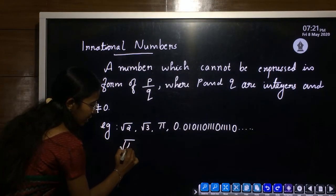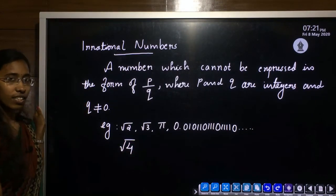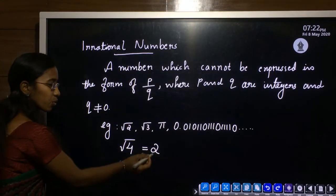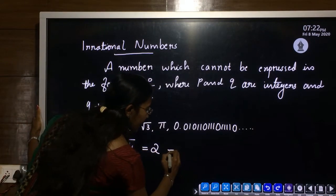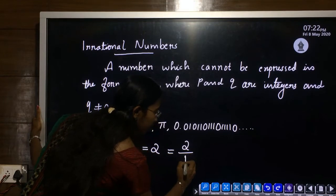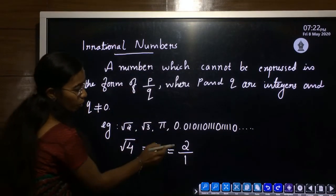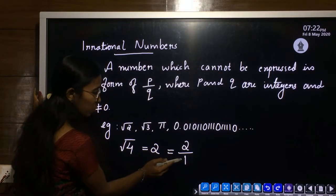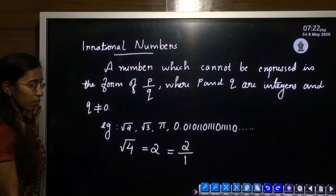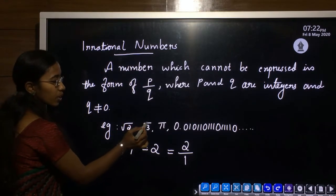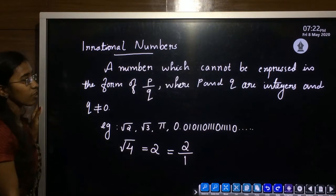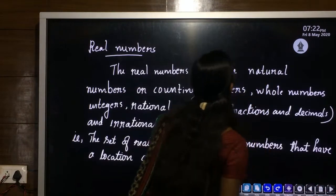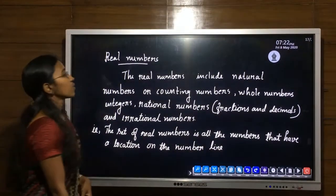Then what about root 4? Is it rational or irrational? The value of root 4 is 2. 2 is a natural number and we can also write 2 as 2 divided by 1. So this is in the form of p by q, where p is 2 and q is 1, which means root 4 is a rational number. So root 2, root 3, and pi are numbers we cannot express in the form of p by q.